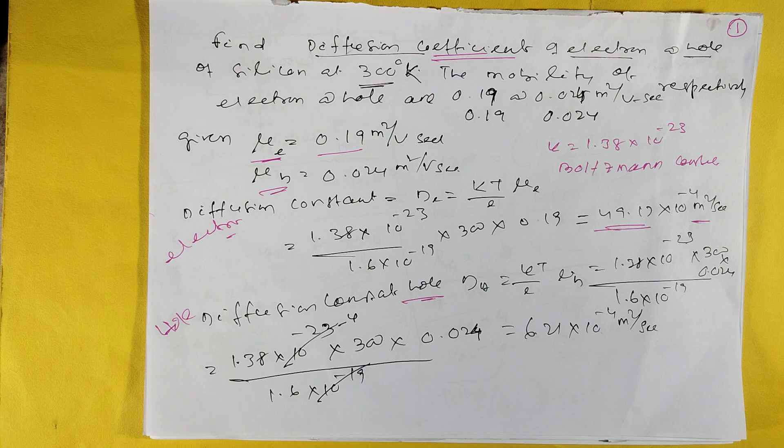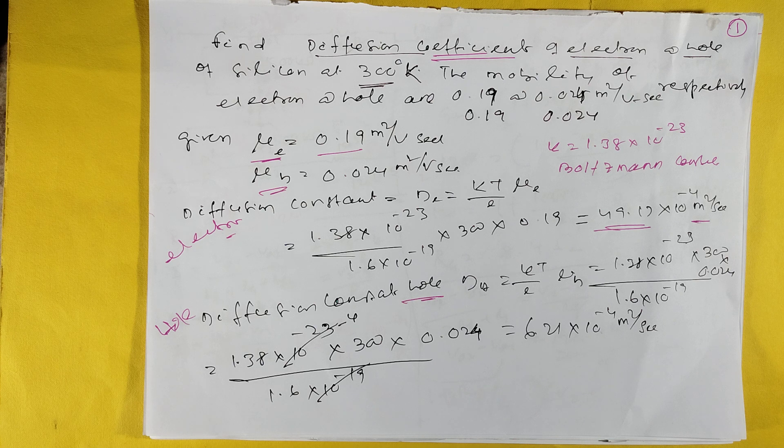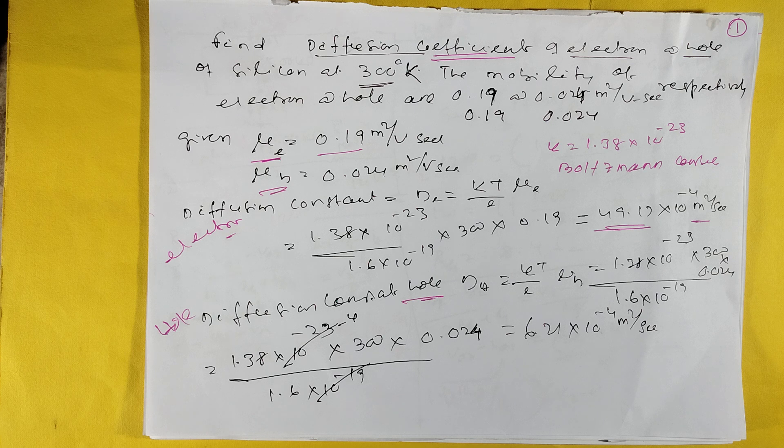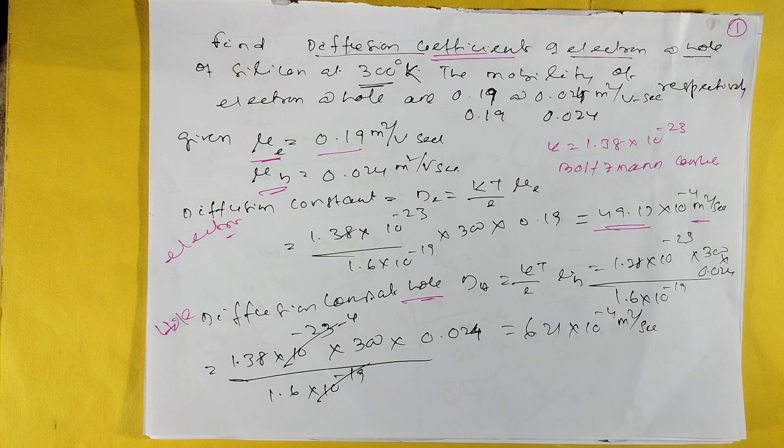μE for electron is given as 0.19, μH for hole is given as 0.024. Accordingly, the diffusion constant for electron will come to 49.17 × 10^-4 m²/s, and for hole it will come to 6.21 × 10^-4 m²/s.